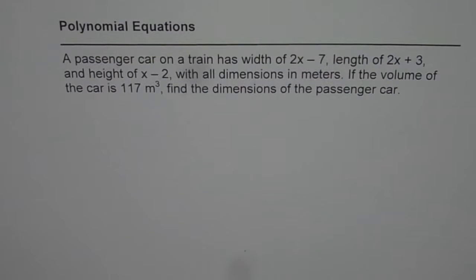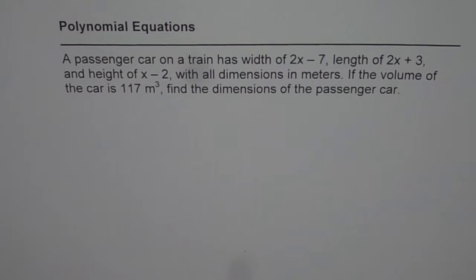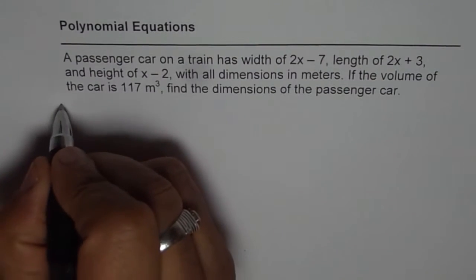I am Anil Kumar and here is a practice question for you on polynomial equations. A passenger car of a train has width of 2x-7, length of 2x-3 and height of x-2, with all dimensions in meters. If the volume of the car is 117 cubic meters, find the dimensions of the passenger car. The first step is always to write down the function, which is volume in terms of x.